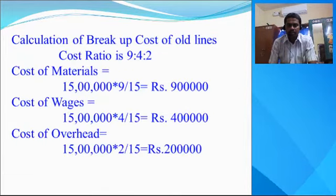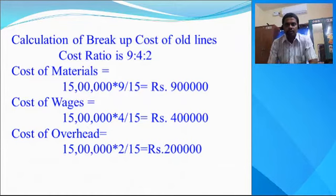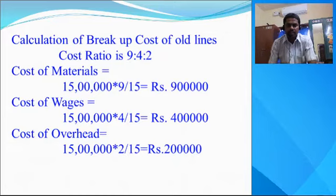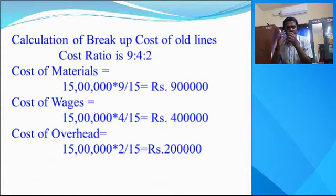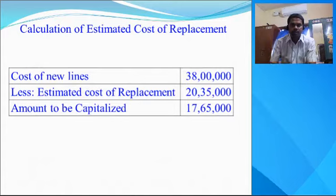How to calculate the breakup cost of old lines: the cost ratio is given from the problem. Cost of materials — old problem is 15 lakhs, percentage 9 by 15, calculate: 9 lakhs. Wages — 15 lakhs, percentage 4 by 15: 4 lakhs. Cost of overhead — 15 lakhs, 2 percentage: amount is 2 lakhs.